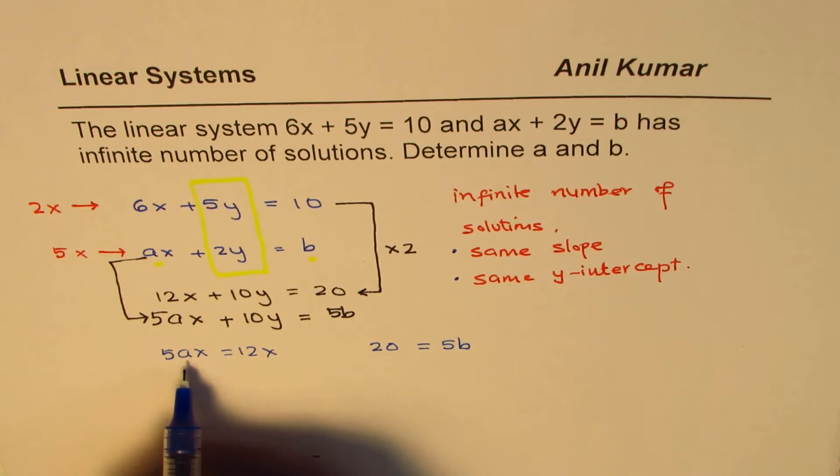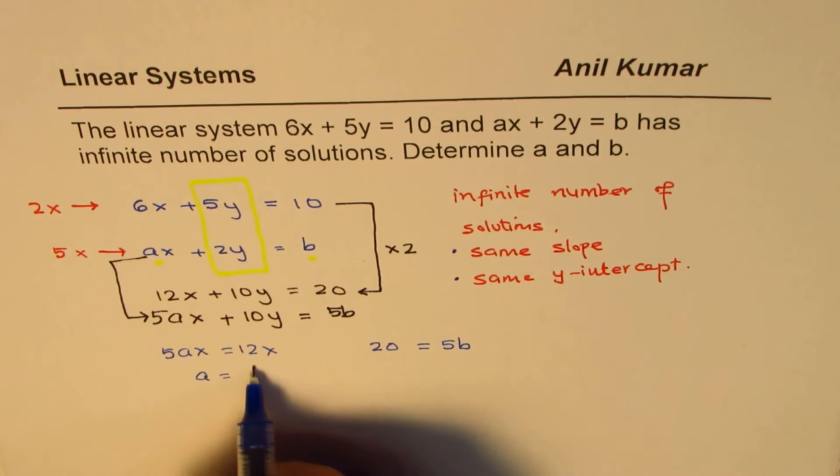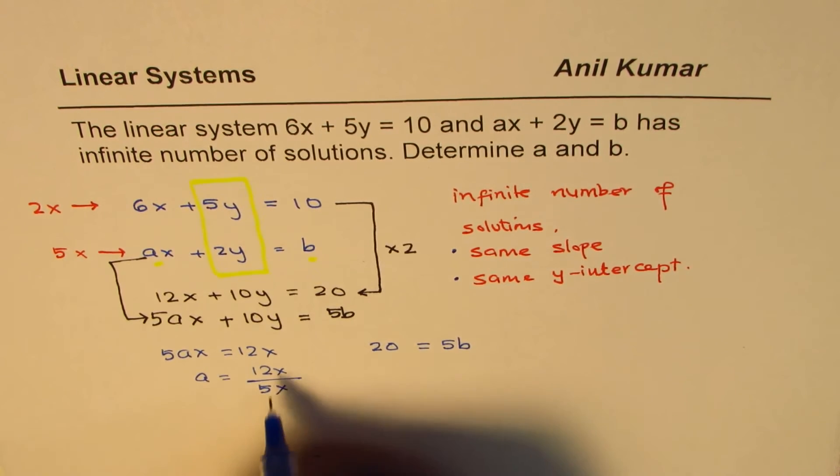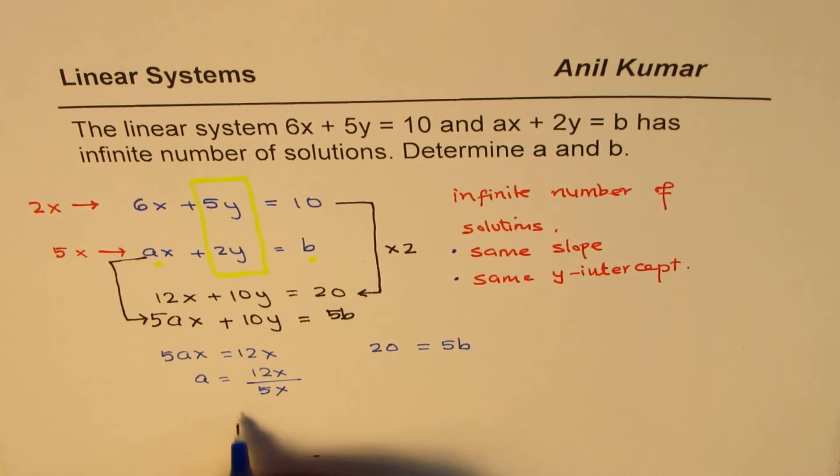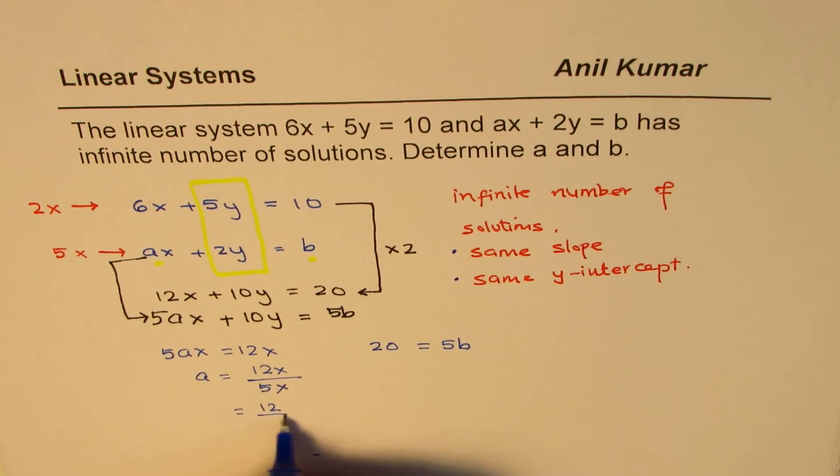So from here, we can solve for a, a equals 12x divided by 5x. So that gives you the value of a as 12 over 5.